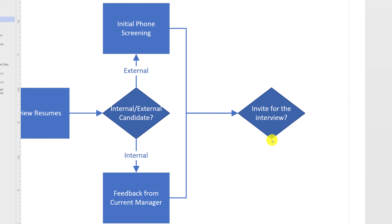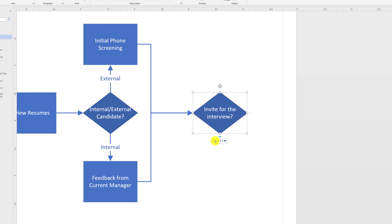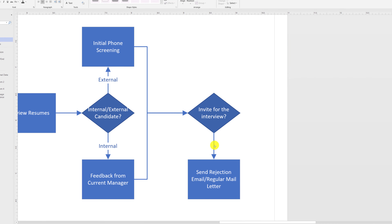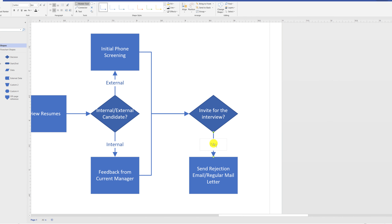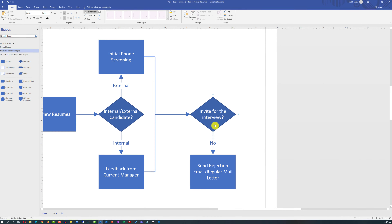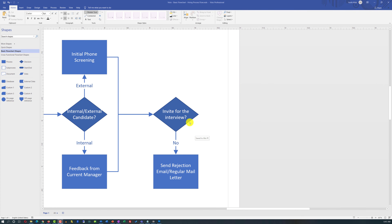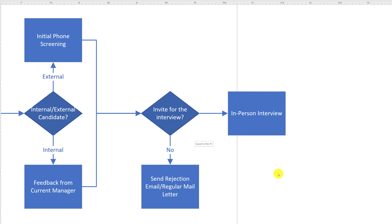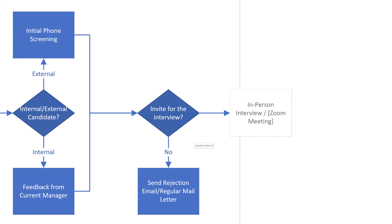Now both positive and negative decision outputs can be shown on the diagram. For a negative decision, I might choose to send an email — shown as a process step. For the label, I'll use a slash to separate 'email or regular mail letter'. To indicate this is a negative decision, I add 'No' to the output arrow from the decision shape. If you choose to invite the candidate, show it as a process step — perhaps 'In-person Interview' or 'Zoom Meeting' due to COVID-19.